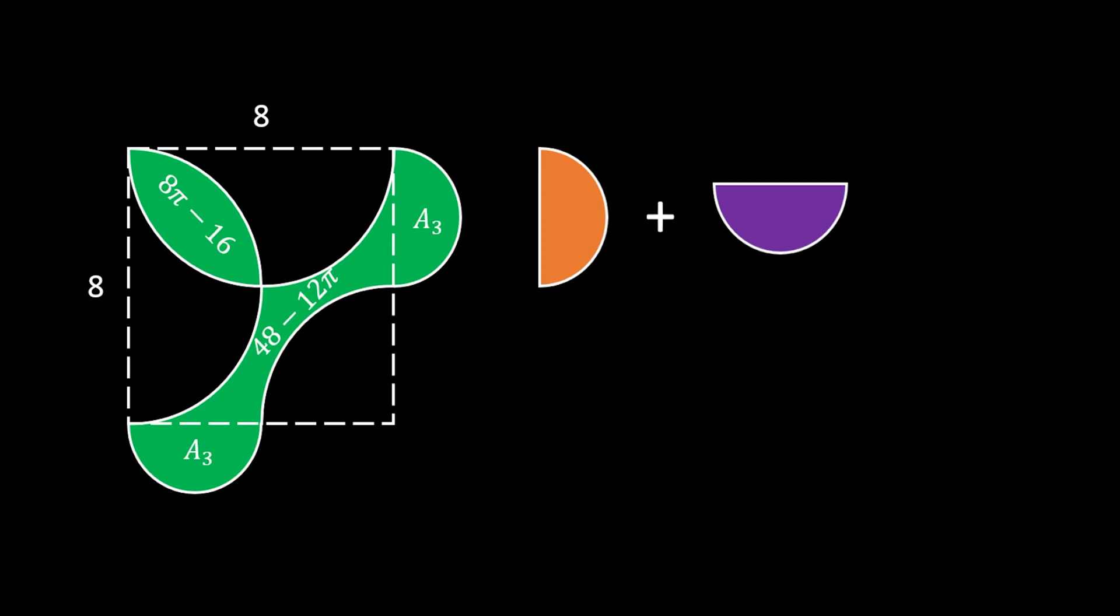The diameter of these two semicircles is equal to half of the side of our square, and that is 4. As you probably already noticed, these two are the same, so they can form one full circle. All that we need to do is to find the area of this circle.